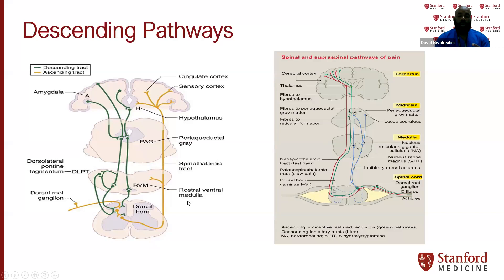To summarize: the ascending pathway sends information all the way to the brain and central nervous system, and the descending pathway brings that information back down and says, this is what you're supposed to do for that pain. That's how ascending and descending pathways work together.